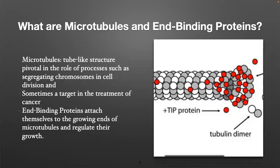Before I begin discussing what my project was about, I'm going to give a little background on what microtubules are. Microtubules are tube-like structures found in pretty much all living cells, and they're often found playing a pivotal role in the formation of the cell and giving the cell its shape. They also play a role in cell division, where they help with the transport of chromosomes into its daughter cells.